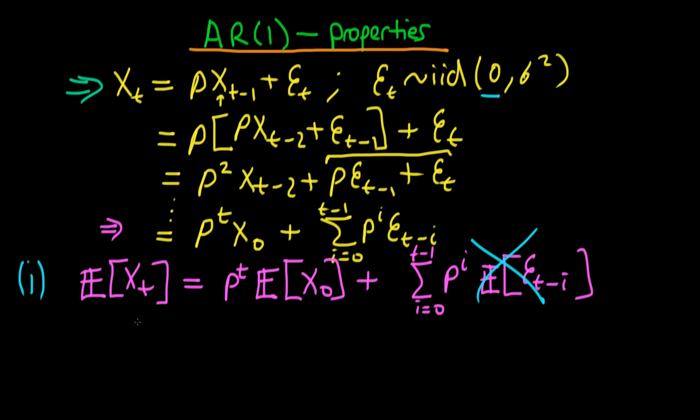And we're left with an expression for the expectation of Xt. Notice that the only way that this can be true is if we have that the expectation of X0 is equal to 0.